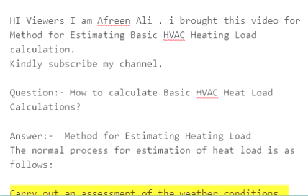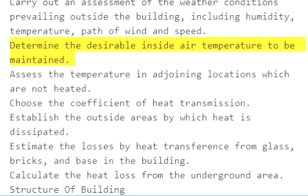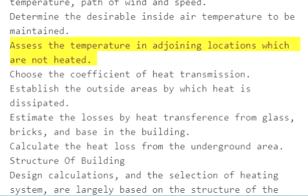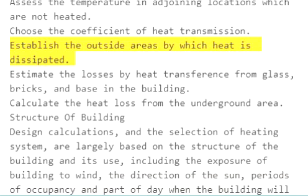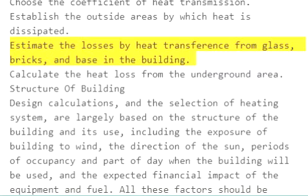Carry out an assessment of the weather conditions prevailing outside the building, including humidity, temperature, path of wind and speed. Determine the desirable inside air temperature to be maintained. Assess the temperature in adjoining locations which are not heated. Choose the coefficient of heat transmission. Establish the outside areas by which heat is dissipated. Estimate the losses by heat transference from glass, bricks, and base in the building.